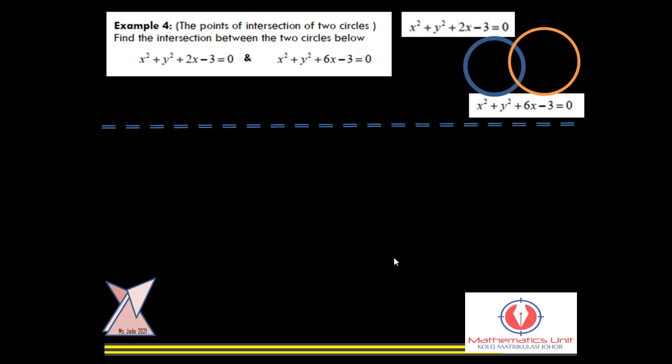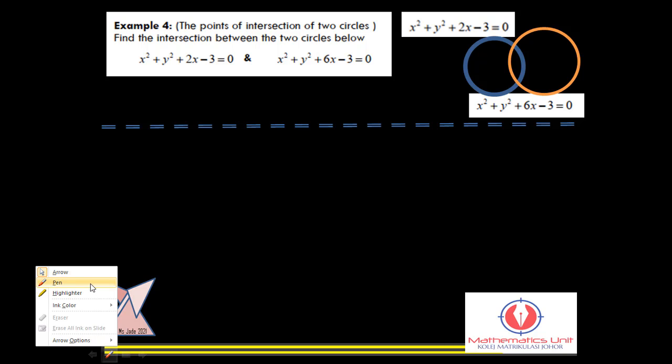Look at this example: the point of intersection. We must have a concept that point of intersection between two circles, maximum is only two. If two circles touching at one point, that one is not intersection. By looking at this diagram, as we know this is the two equations that are given. One is x² + y² + 2x - 3 = 0 and the other one is x² + y² + 6x - 3 = 0. Both with no y, so basically this equation is quite simple and easier to solve.